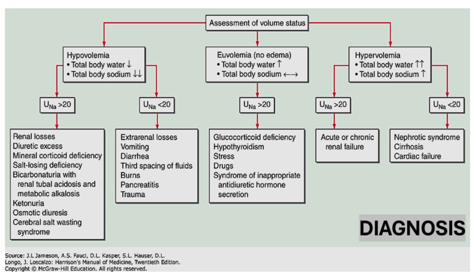Testing urine electrolytes and osmolality is also crucial in the initial evaluation. Urine sodium concentration can aid in determining the cause of hyponatremia: levels below 20 mEq per liter suggest extrarenal salt losses, while levels above 40 mEq per liter indicate renal salt wasting. Increased blood urea nitrogen and creatinine levels may point to a renal cause.